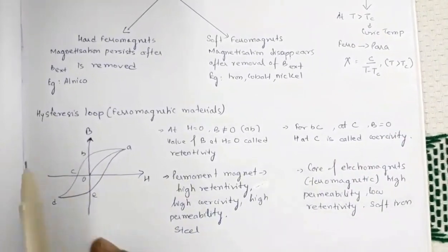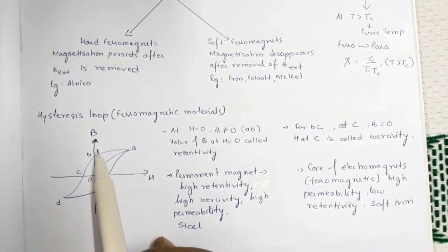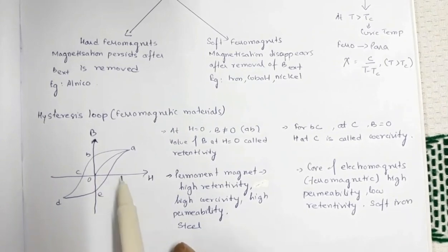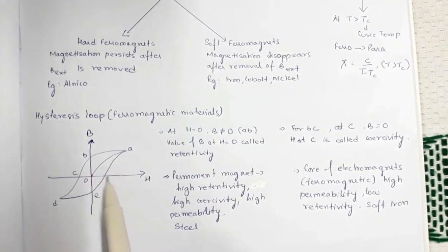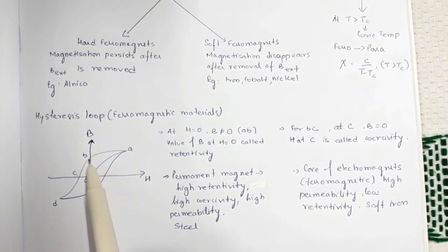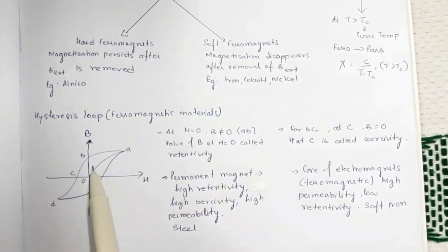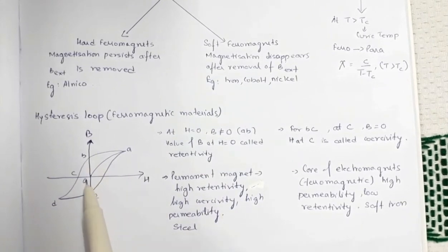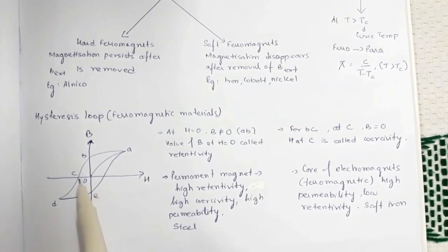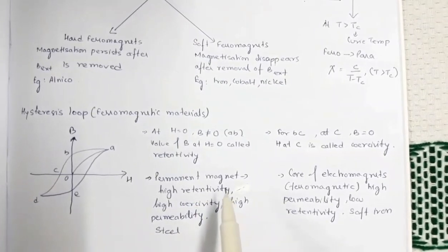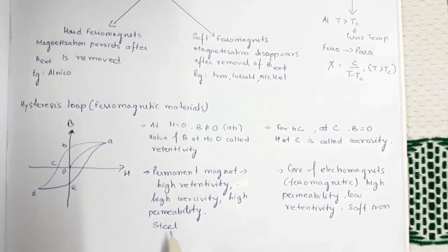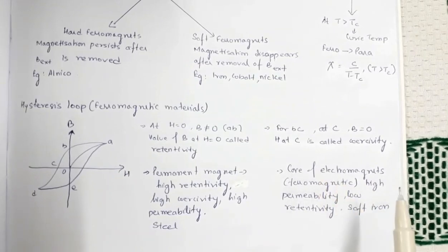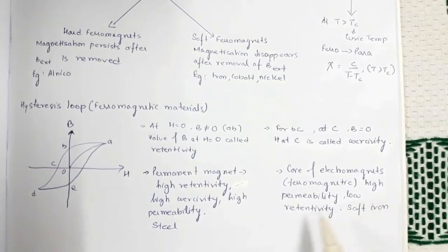Finally, there is the hysteresis loop — the curve between magnetic field B and magnetic intensity H. At H = 0, B is not equal to zero; this residual value is called retentivity. When B becomes zero but H is not zero, that point defines coercivity. For permanent magnets, you need high retentivity, high coercivity, and high permeability — an example is steel. For making the core of electromagnets, you need high permeability and low retentivity — an example is soft iron.